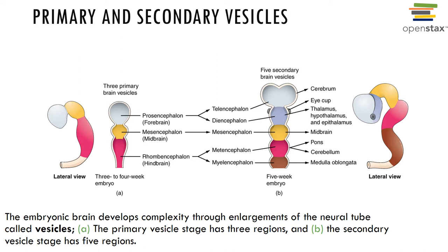The forebrain and hindbrain structures become distinct adult structures. The forebrain becomes the cerebrum — including the cerebral cortex, white matter, and basal nuclei — as well as the thalamus, pineal gland, and hypothalamus. The hindbrain forms the brain stem, the pons, the cerebellum, and the medulla oblongata.